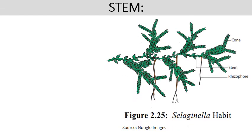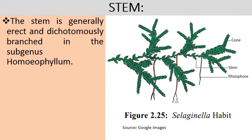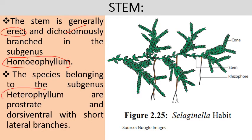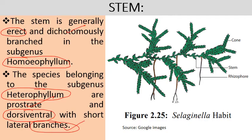Regarding stem structure: in the Homeophyllum subgenus, the stem is generally erect and dichotomously branched, while in the Heterophyllum subgenus it is prostrate and dorsiventral — creeping on the soil surface with short lateral branches.